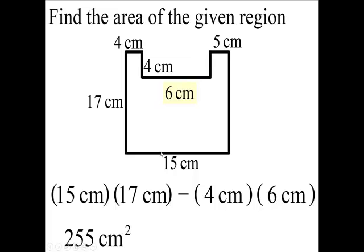And then we'll have the area inside. Now, 15 times 17 is 255, and you have centimeters times centimeters, so square centimeters. And then from that, you take away the 24. Take away 24. You're going to have 231 square centimeters.